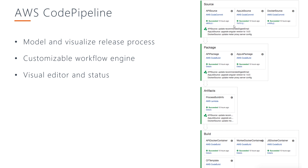This is a sample AWS CodePipeline where you can see several stages. This is where we model and visualize our release processes and customize the workflow engine. This visual editor allows developers and DevOps engineers to visualize what they are doing in their pipeline and make certain changes if they feel like it.